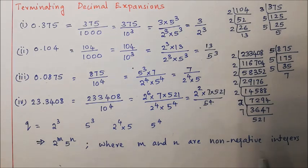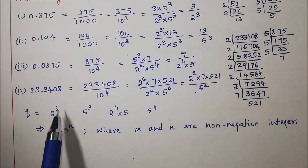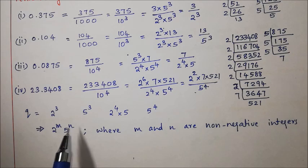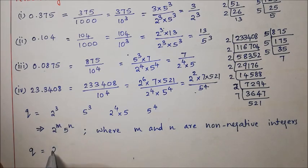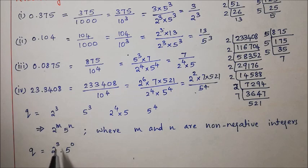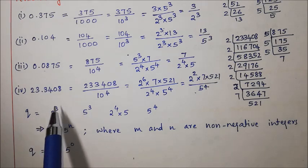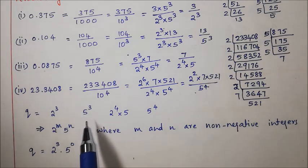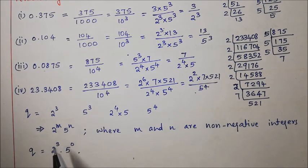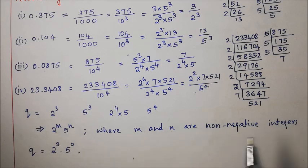Non-negative integers means whole numbers: 0 and positive integers. Some may wonder how 2 to the power 3 fits the form 2 to the power m into 5 to the power n. Well, 2 to the power 3 can be written as 2 to the power 3 into 5 to the power 0, since 5 to the power 0 equals 1. So if q is a power of 2 or a power of 5, we can represent it as 2 to the power m into 5 to the power n, where m or n may be 0.